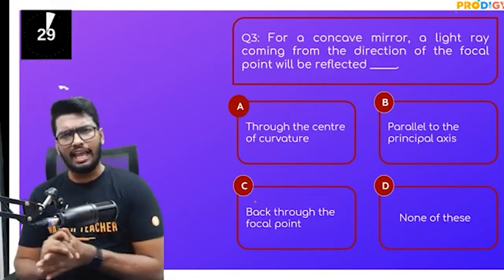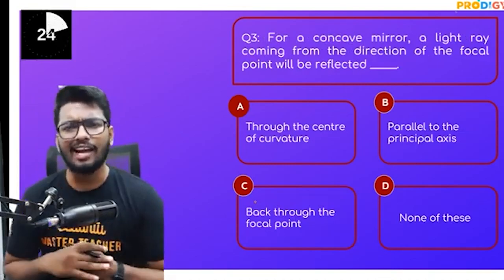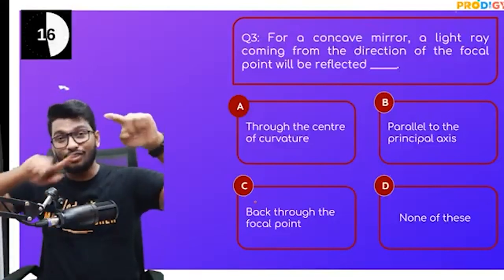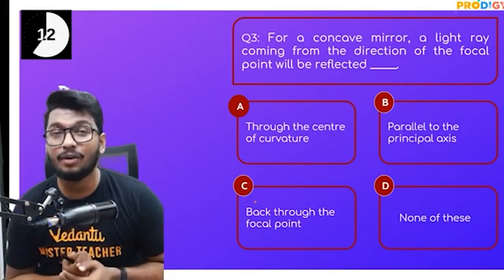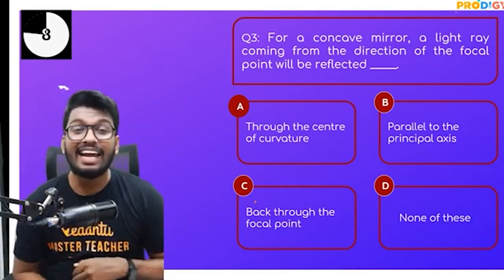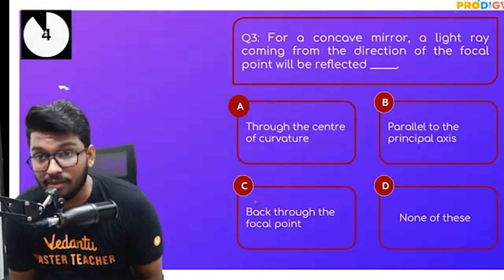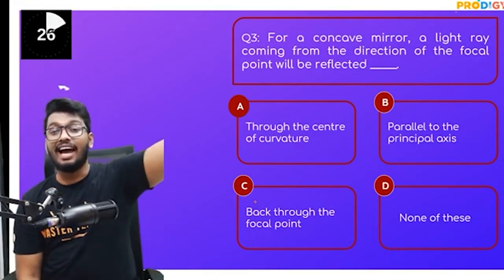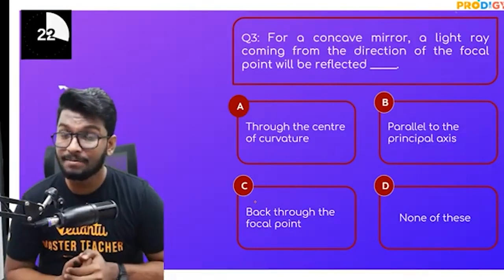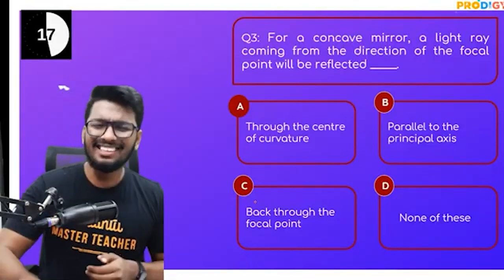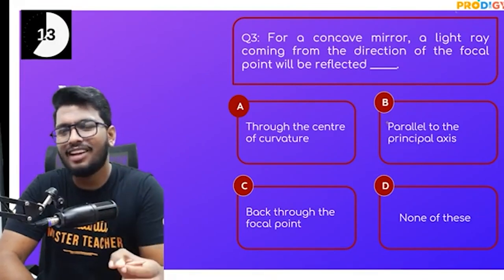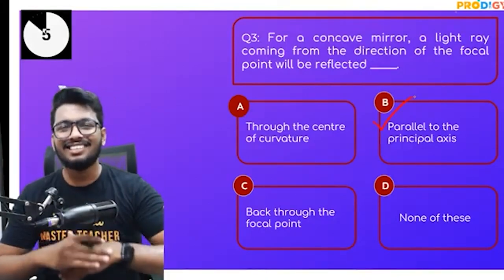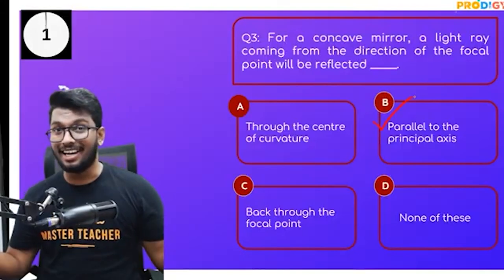For a concave mirror, a light ray coming from the direction of the focal point will be reflected how? Options: pass through the center of curvature, be parallel to the principal axis, go back through the focal point, or none of these. The answer: a ray of light passing through the focus after reflection — be it concave or convex — will always become parallel to the principal axis. That's one of the most important standard incident rays for both concave and convex lenses.